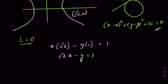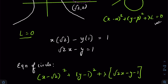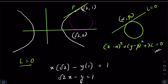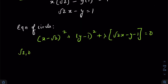With (α, β) = (√2, 1), the equation of the required circle is: (x − √2)² + (y − 1)² + λ(√2·x − y − 1) = 0. To find λ, we use the fact that the circle must pass through focus (√2, 0).